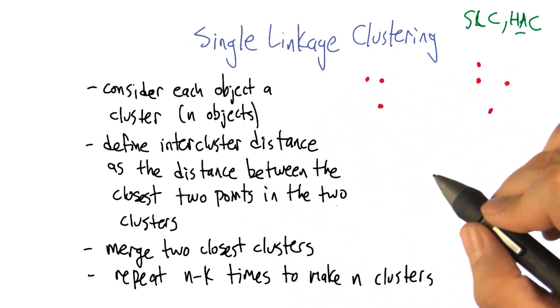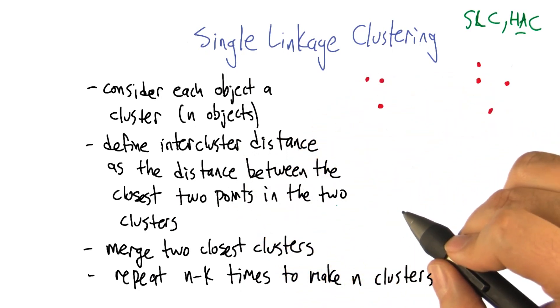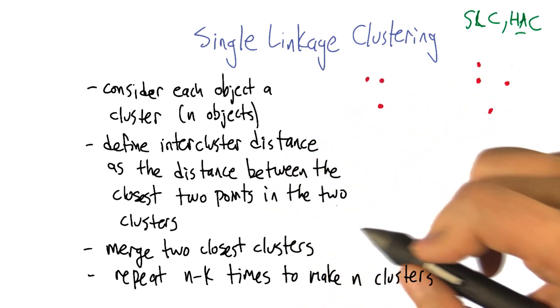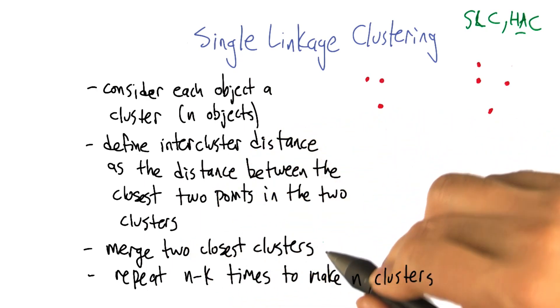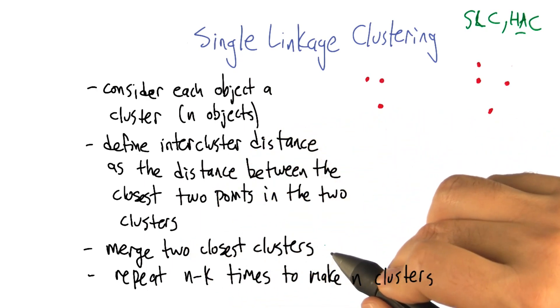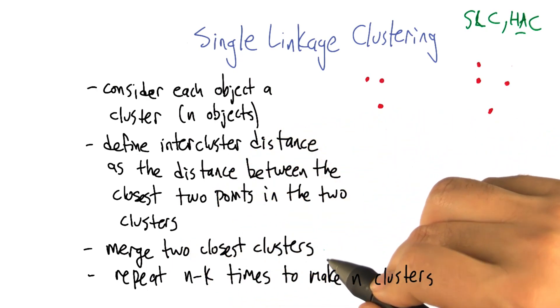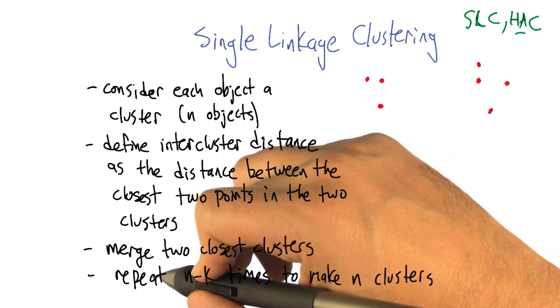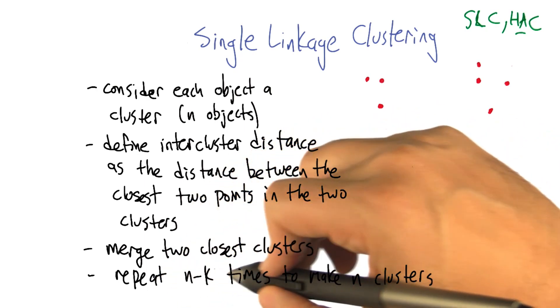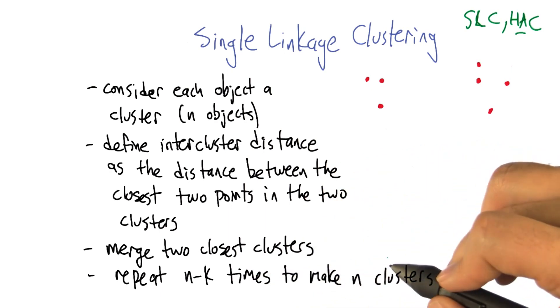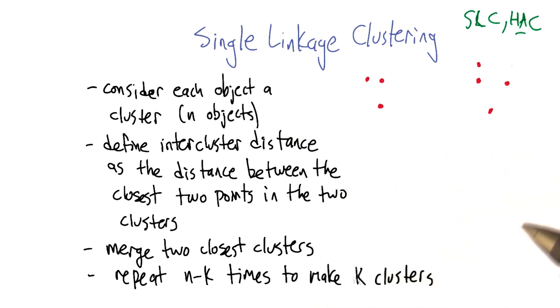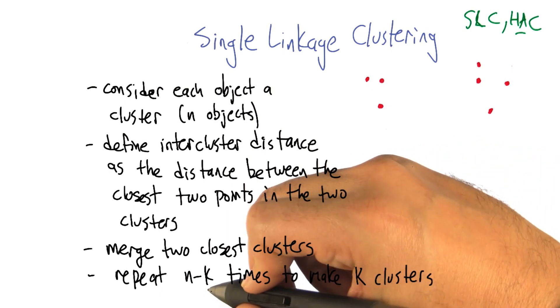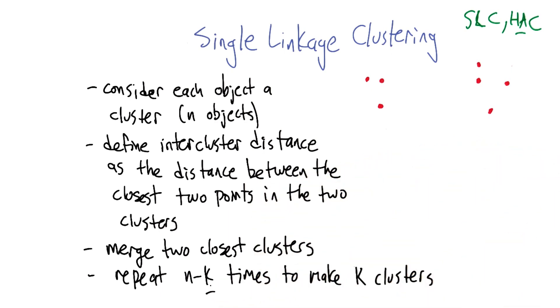So now what we're going to do is iterate: merge the two closest clusters because they belong together. We're going to repeat that n minus k times to leave us with k clusters. So k is now an input to this algorithm.